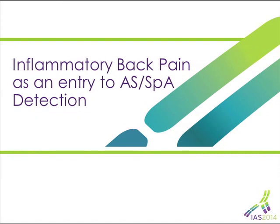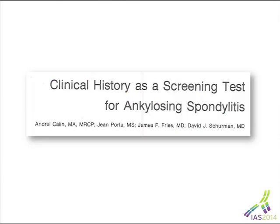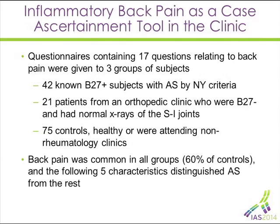Let's look at the current topic of inflammatory back pain to ankylosing spondylitis. Andre Calin, when he was working at Stanford, had an idea that they could separate out people with ankylosing spondylitis from the huge population of people with back pain if they used targeted questions. They approached this in a Bayesian fashion: what is the sensitivity, what is the specificity, and when you apply it to a patient population of known prevalence, how can you do this?